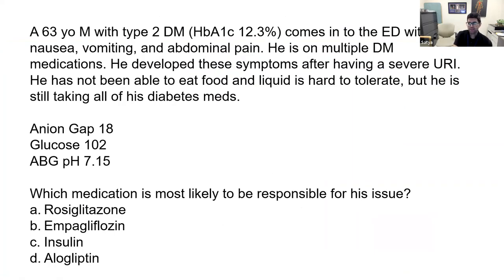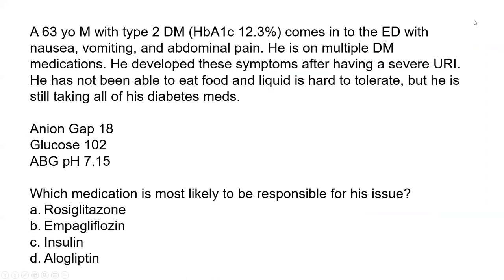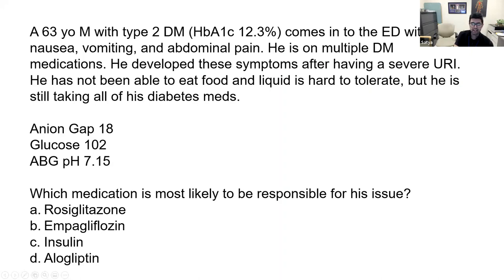A 63-year-old male with type 2 diabetes, A1C of 12%, comes into the ER with nausea, vomiting, and abdominal pain. He's on multiple diabetes medications and developed these symptoms after having a severe URI. He has not been able to eat food, and liquid is hard to tolerate, but he is still taking all of his diabetes medications.